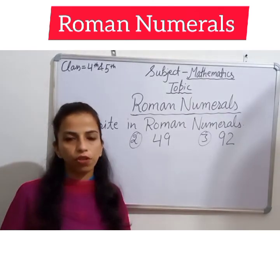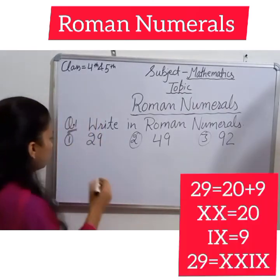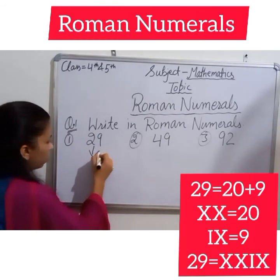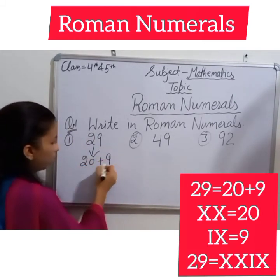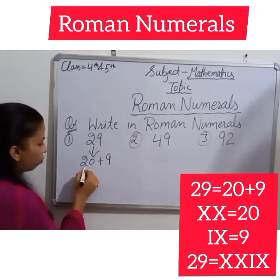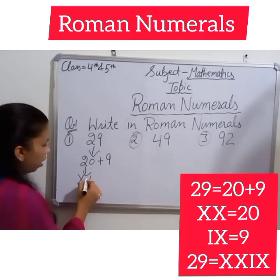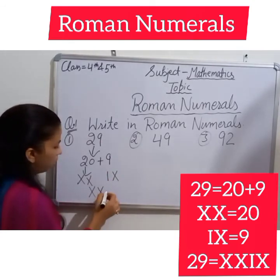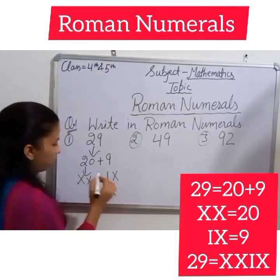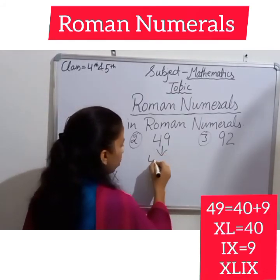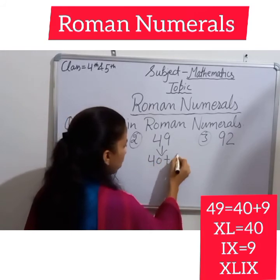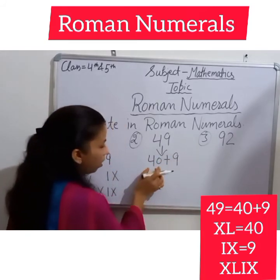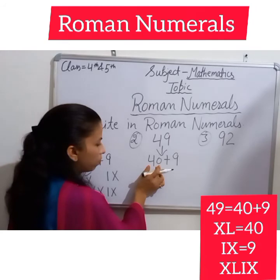After discussing the rules, let's take some examples. First, 29: you can write it as 20 plus 9. The Roman numeral for 20 is XX and for 9 is IX, so the Roman numeral for 29 is XXIX.